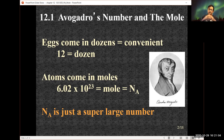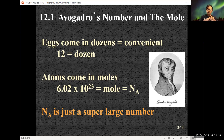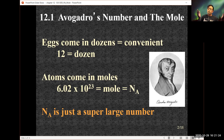Half a dozen means we're talking about six. The same concept applies to the mole — it just happens to be a large number. We could talk about one mole, a quarter mole, or any number of moles, like 0.0001 moles.